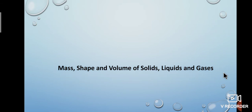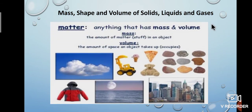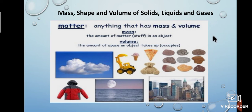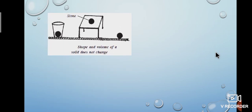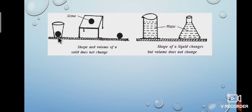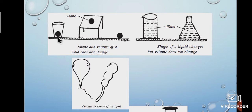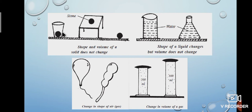Next, we will see mass, shape and volume of solid, liquid and gases. Matter is anything that has mass and volume. Mass is the amount of matter in an object. Volume is the amount of space an object takes up. Matter in the form of solid, liquid and gas contains mass and volume. The first picture explains that solids have a definite shape and volume. If you place a stone on a table, then in a tumbler, then on the floor, you do not find any change in the volume or shape of the stone.